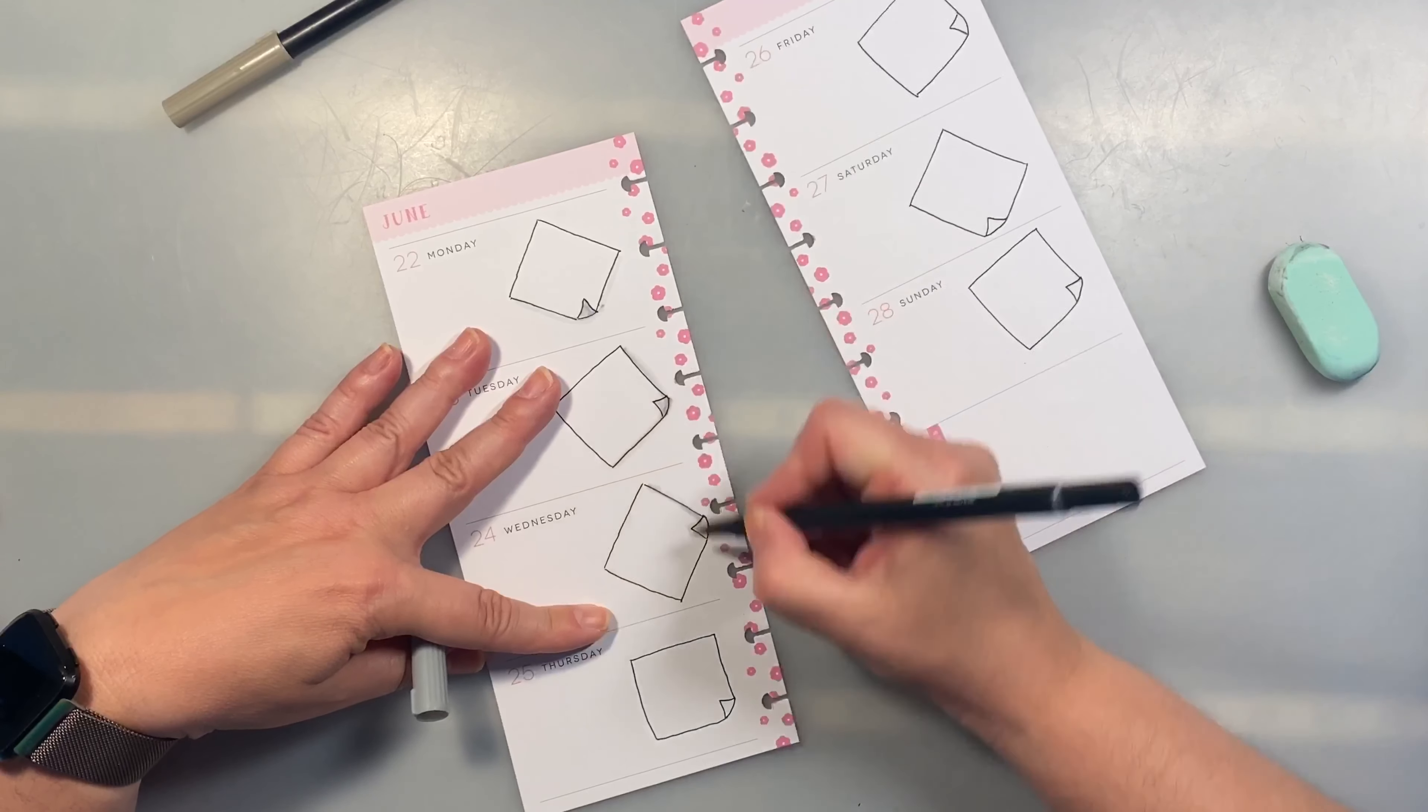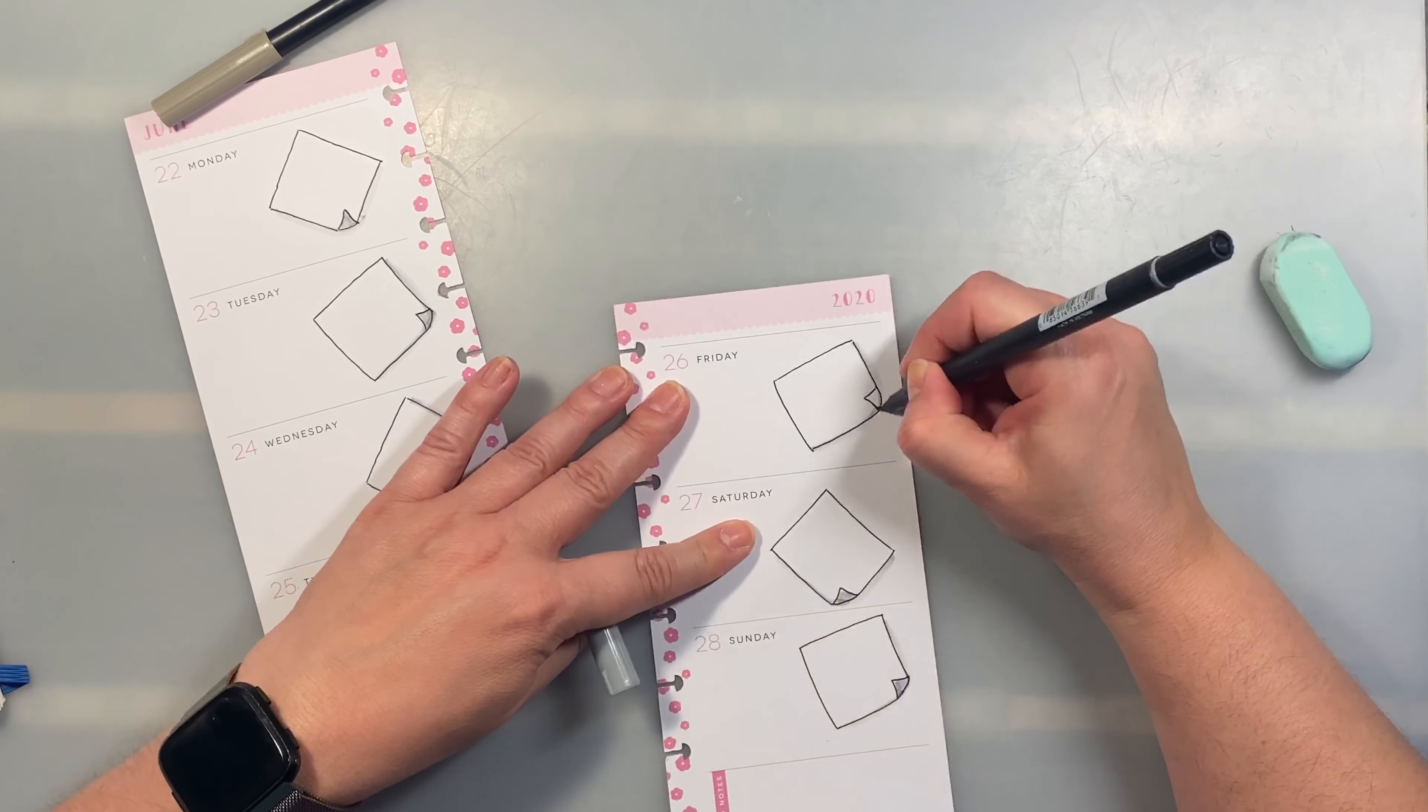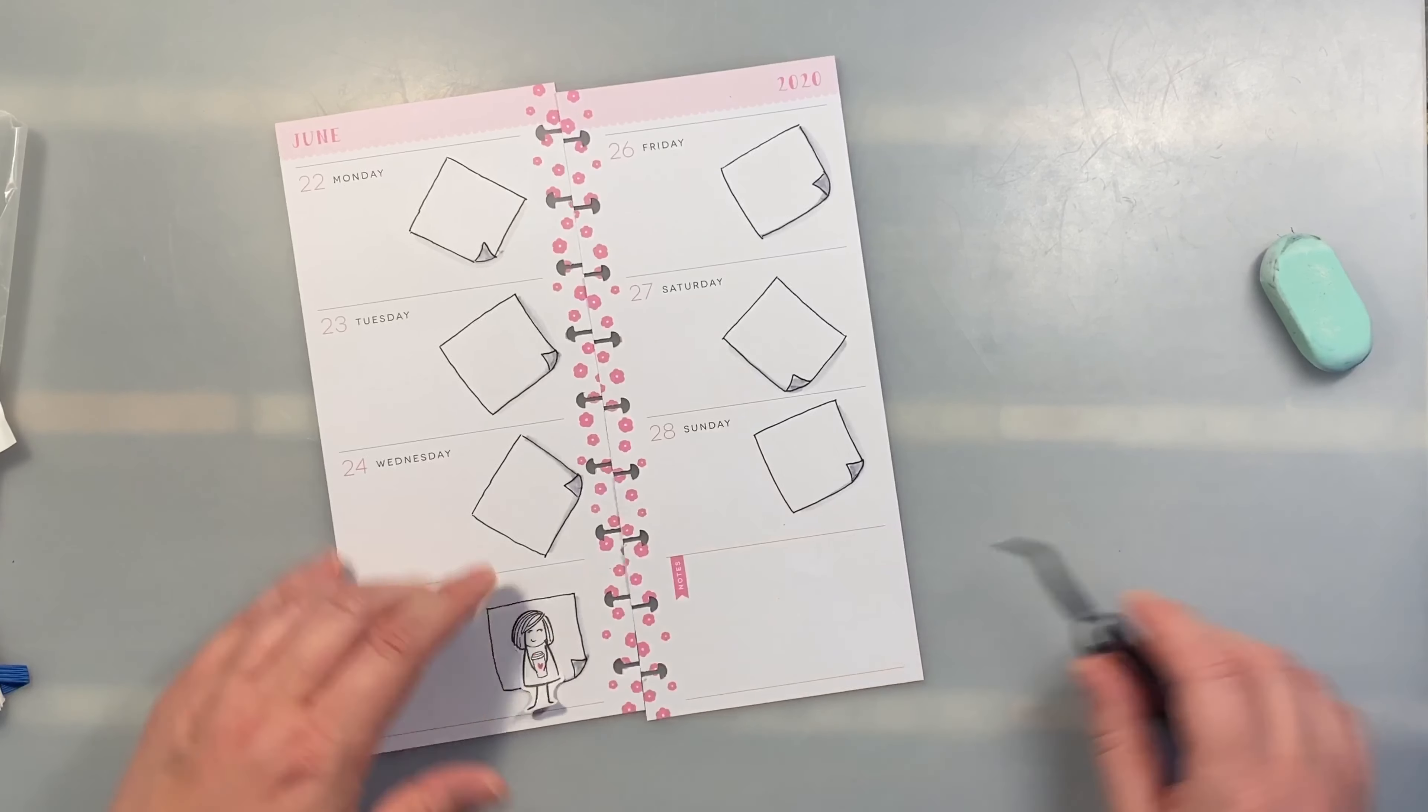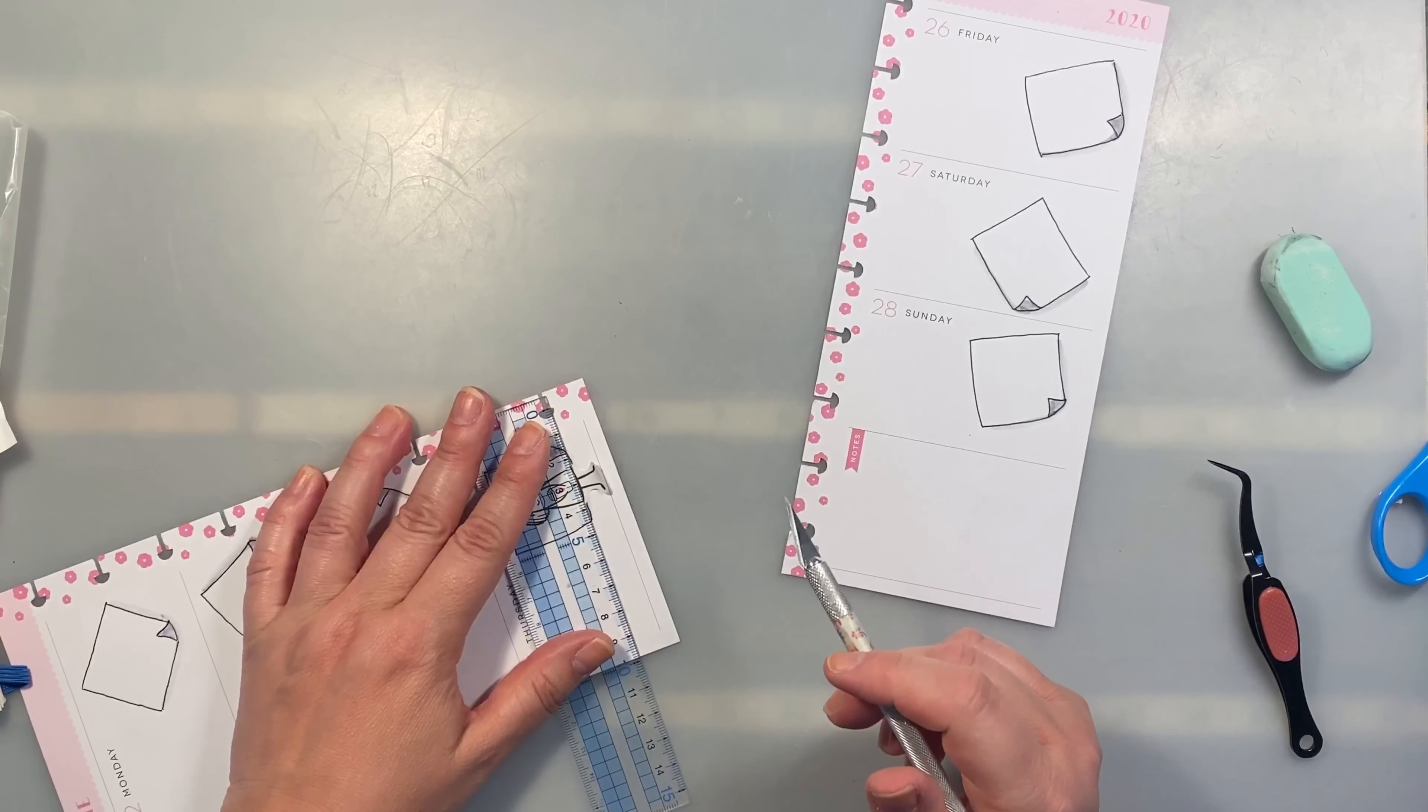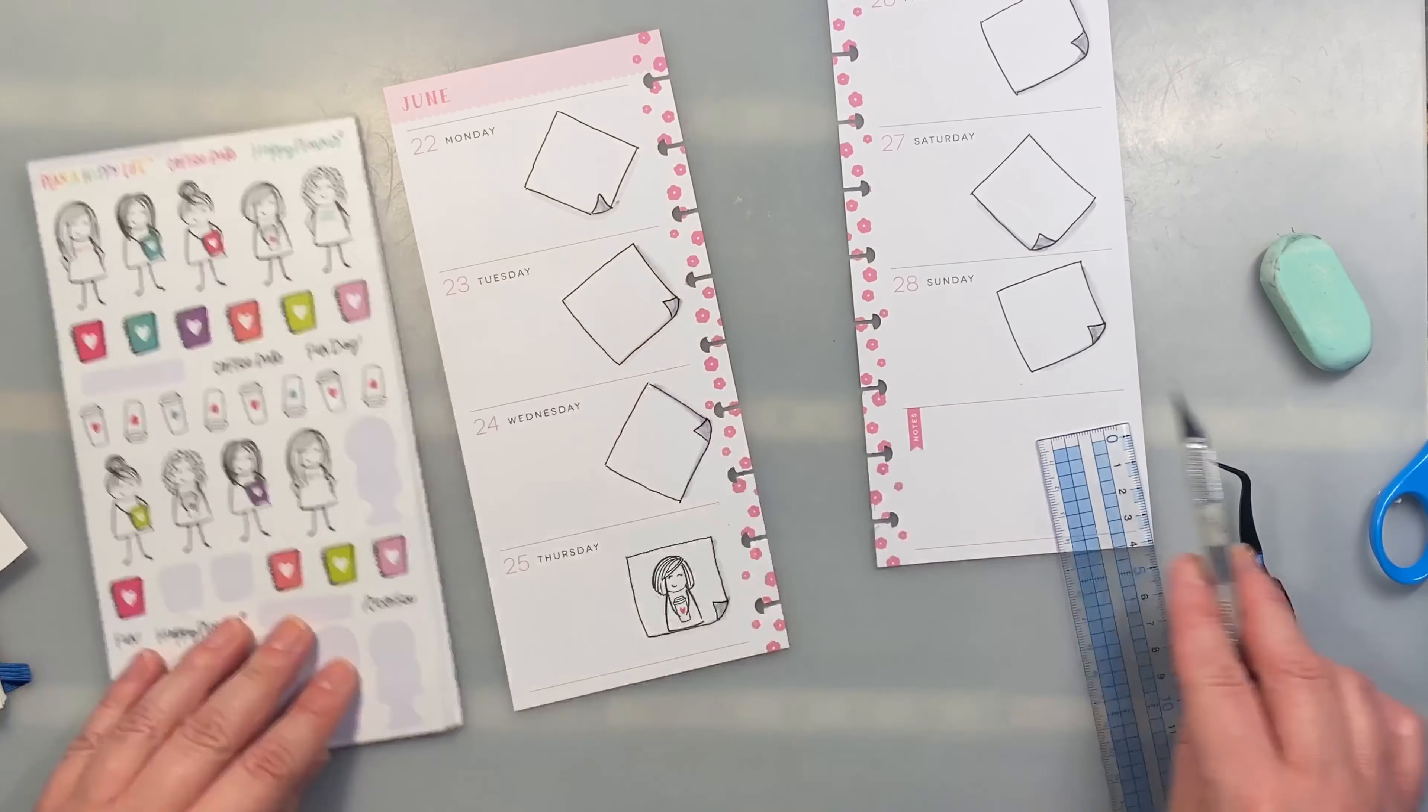So first we need to take these pages out, put this to the side, and we need to start drawing this. And I think that I'm going to probably put them all along the right side, and then do some of the Check It Off stencil over on the right, a few of them, so that I have room to write my things for each day. So let's get started.